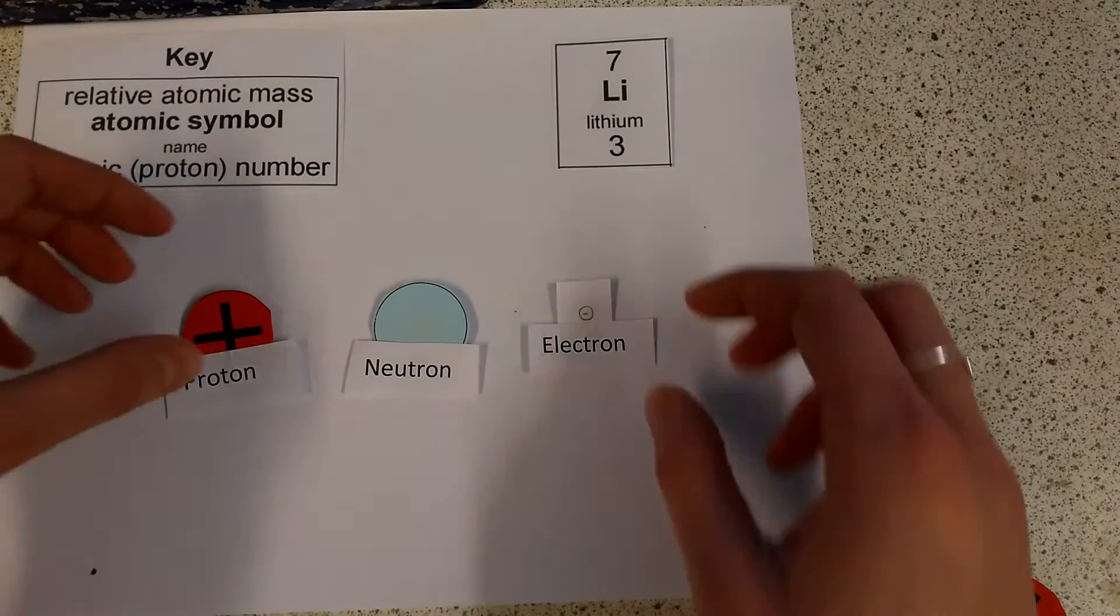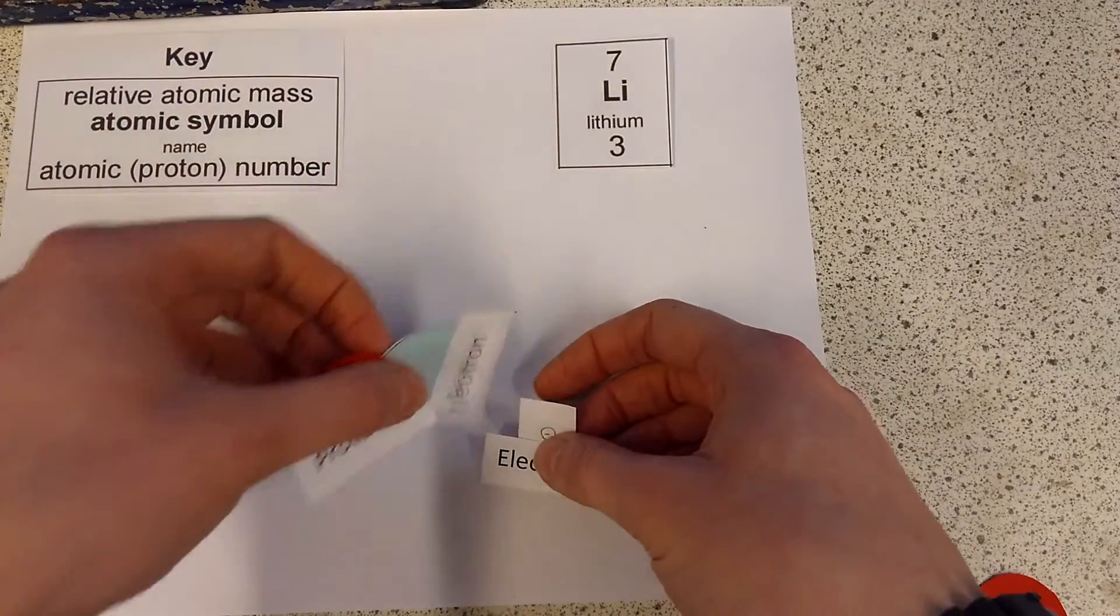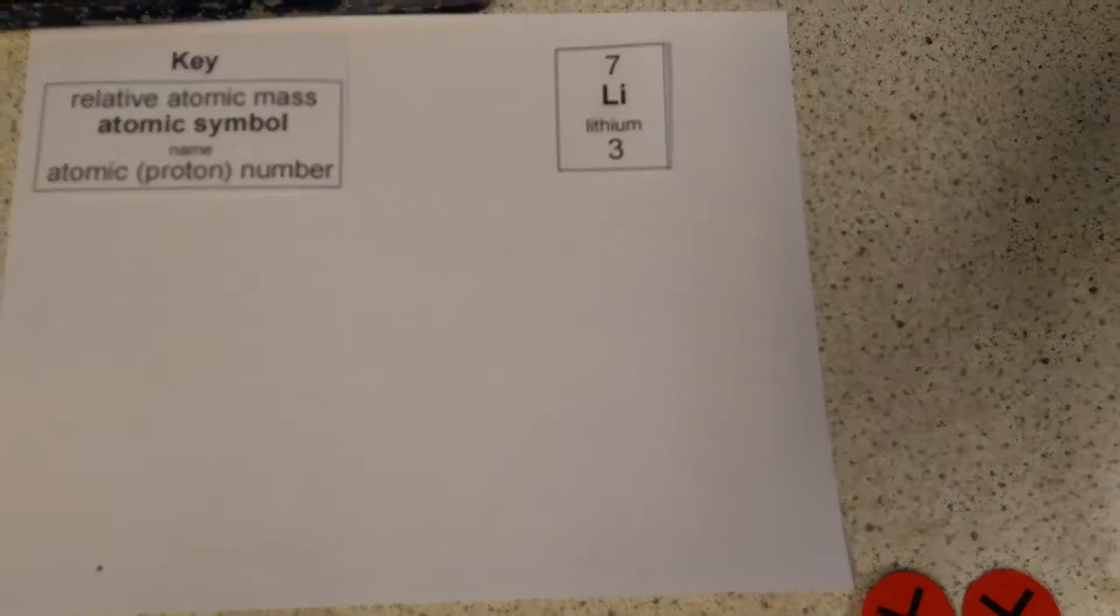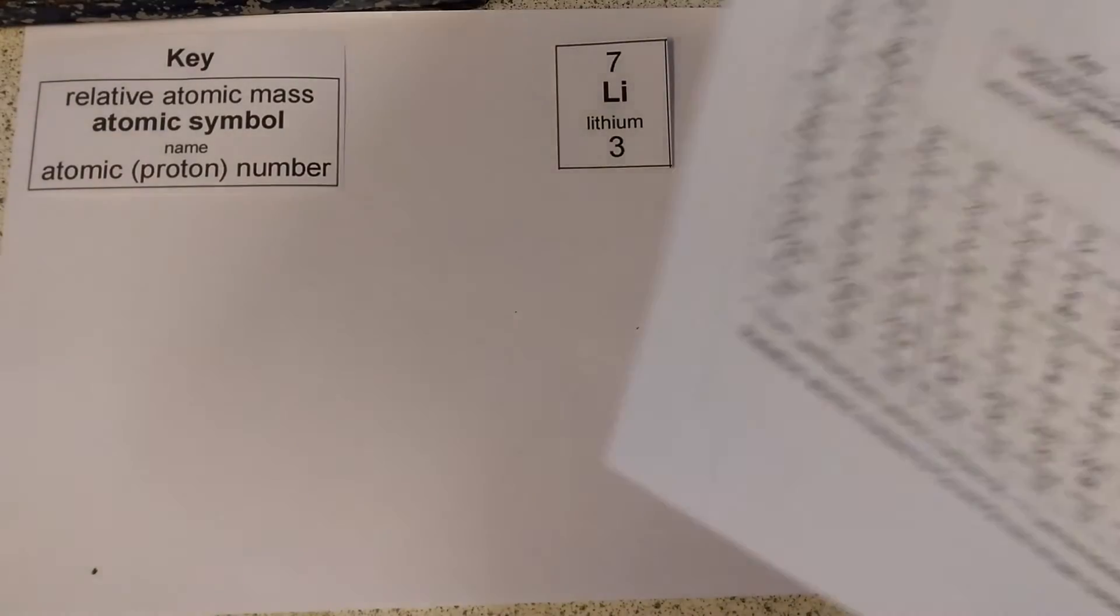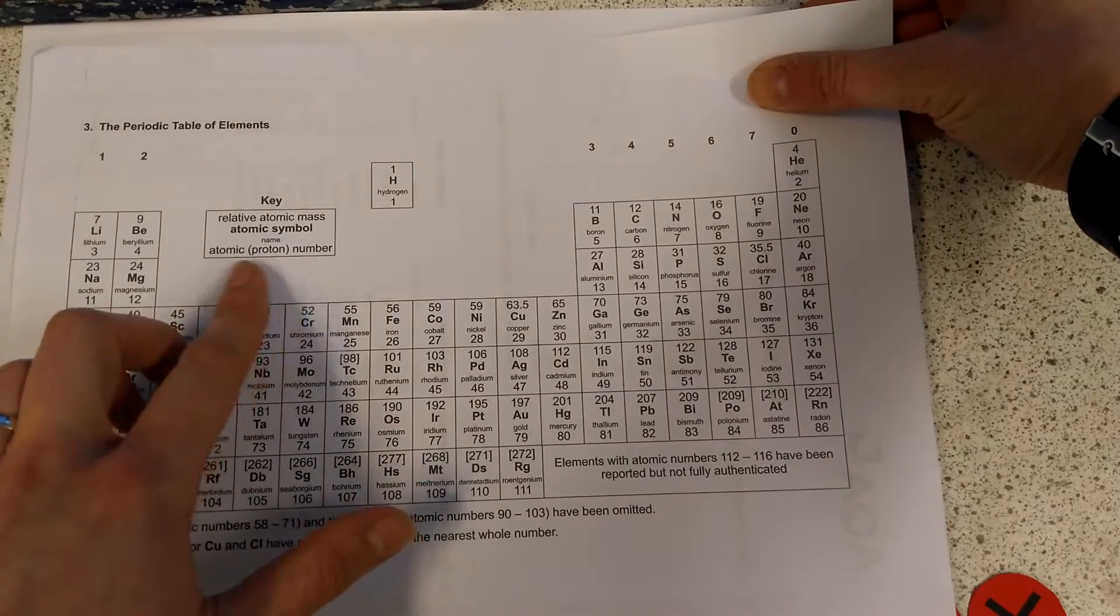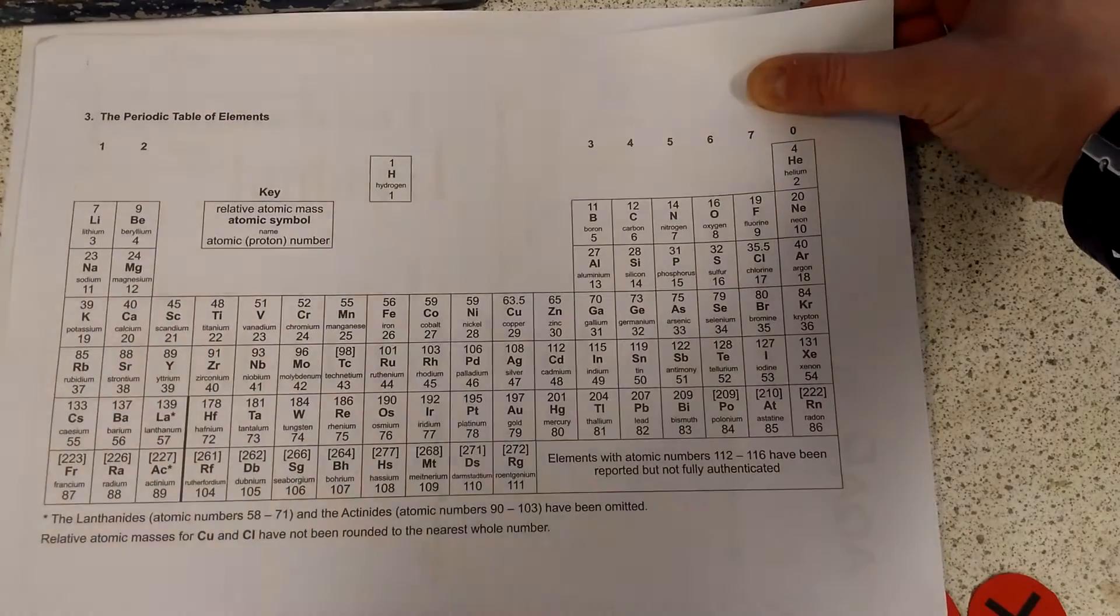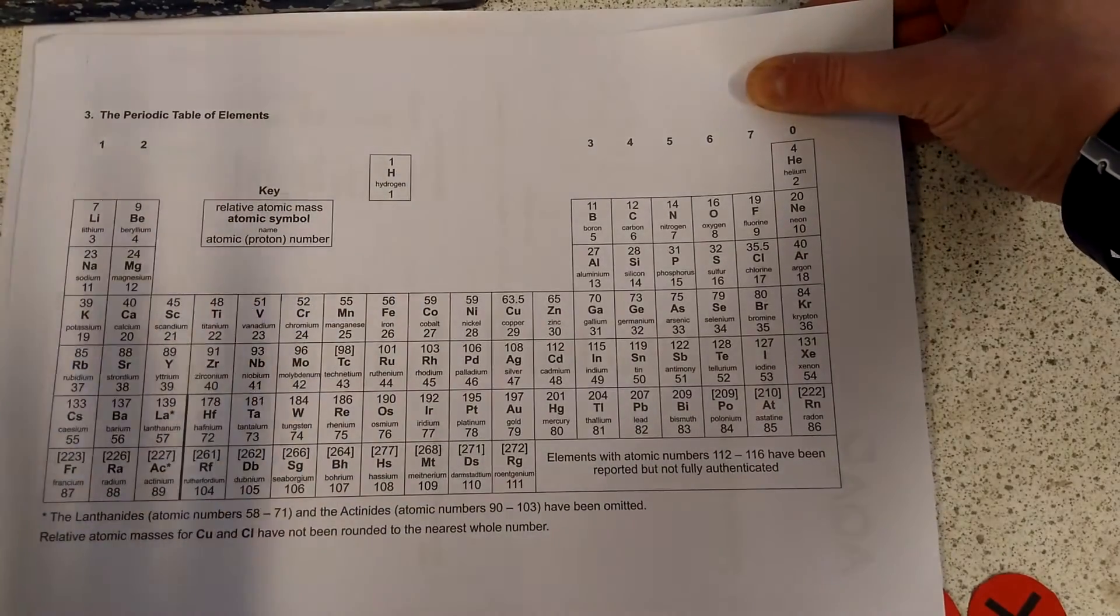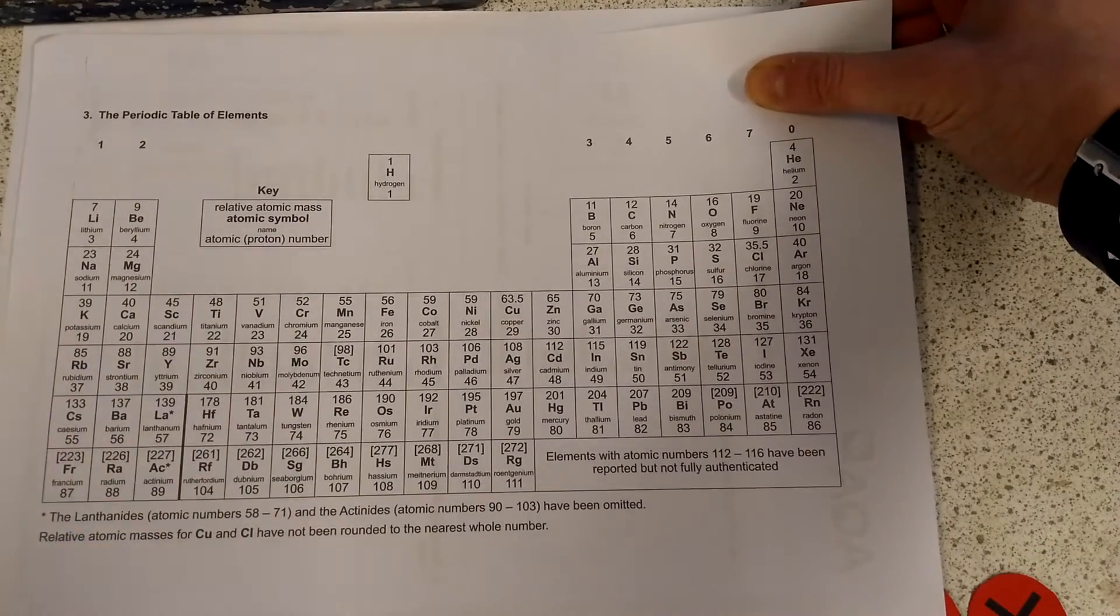Now we've got a little key up here, and the reason that that key is there is that that key is the same one you are going to have in your GCSE science exam. So in your chemistry exams, you're going to have this periodic table, and it has got this key right here. So if we get confused, if we forget what we're doing, we can always look right there at that key, and it's going to give us some clues.